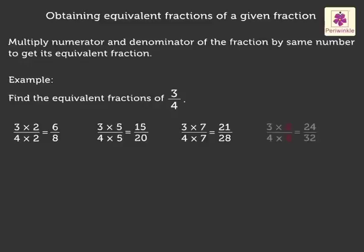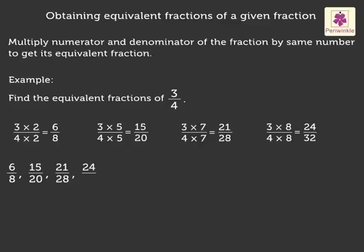Multiplying with eight, we get three into eight upon four into eight, which is equal to twenty-four upon thirty-two. Thus, six upon eight, fifteen upon twenty, twenty-one upon twenty-eight, twenty-four upon thirty-two are a few equivalent fractions of three upon four.